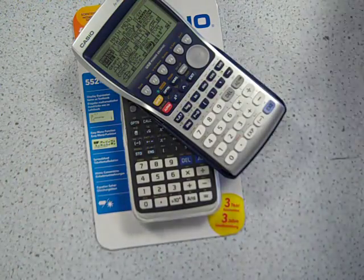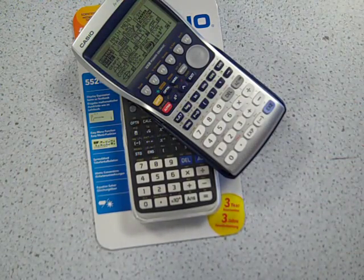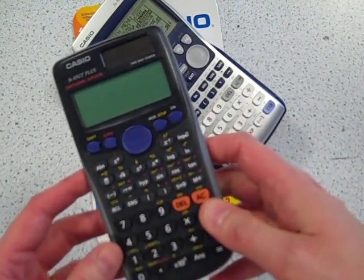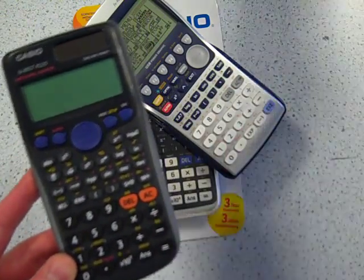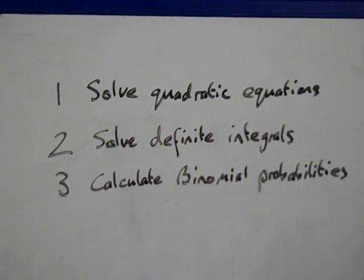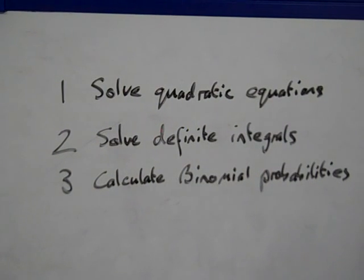But the new A-Level has a number of requirements that mean this calculator just isn't going to be good enough. In particular, three things we're looking at: the need to solve quadratic equations, solve definite integrals, and calculate binomial probabilities.